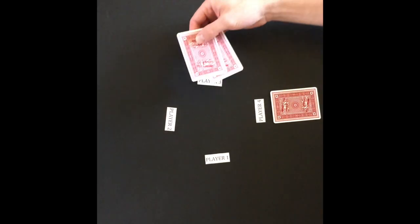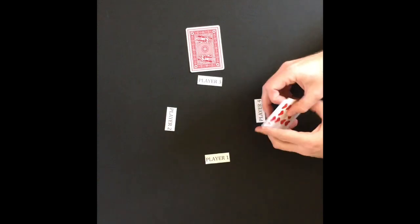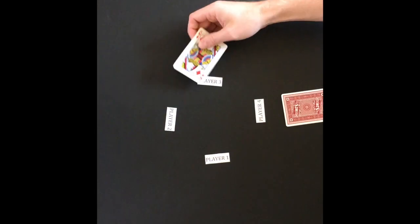The object of the game is to avoid being the Old Maid, which is the last player holding the odd queen.